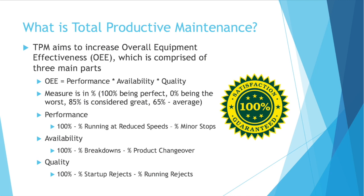Then throughout the day, as you're running rejects, think about each part that's rejected — that took time to make. You can see how this really begins to become a comprehensive system. If you improve your quality and focus on TQM, you'll have less rejects and more time, which will increase your OEE — a component of total productive maintenance. It all really begins to tie together.